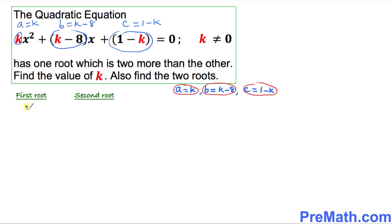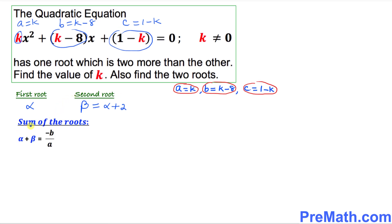Let's suppose the first root of this quadratic equation is alpha and the second root is beta. The condition says one root is two more than the other, so beta equals alpha plus two — that means beta is two more than alpha.